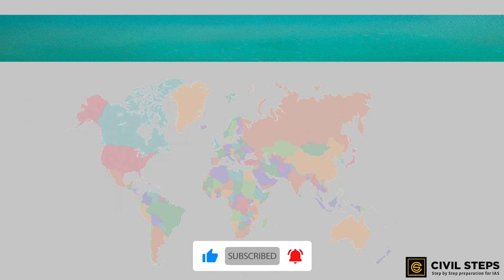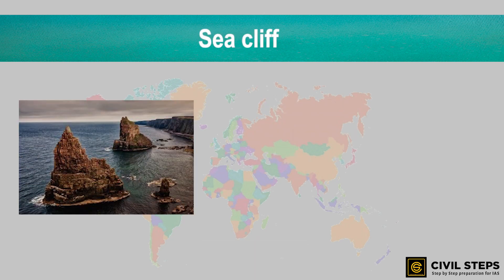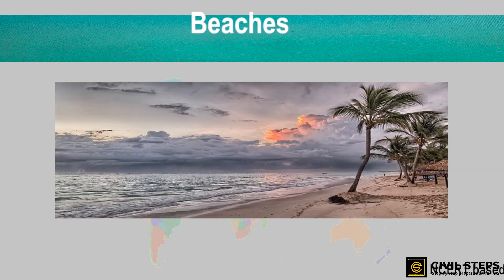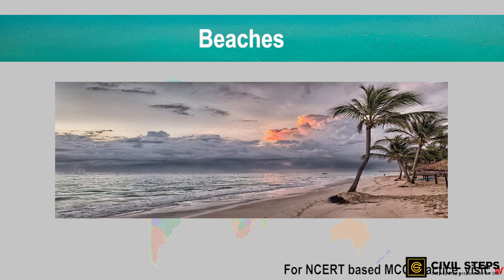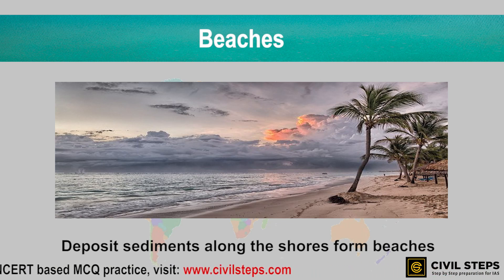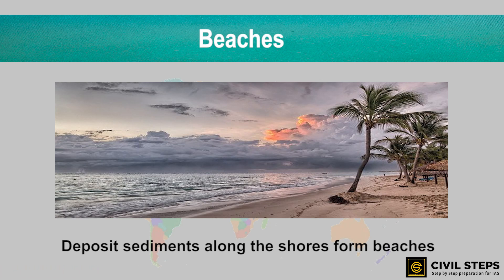A steep rocky coast rising almost vertically above sea water is called a sea cliff. Sea waves that deposit sediments along the shores form beaches. These are the landforms created by sea waves: sea caves, sea arches, stacks, sea cliffs, and beaches.